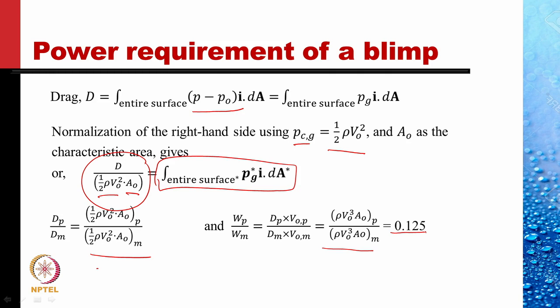So the prototype uses only one-eighth of the power used by the model. The model would use eight times the power of the prototype. Why is this so? It's largely because the model is moving in water, which is about a thousand times denser. Therefore, you need to do a lot of work and spend a lot of power in moving the blimp at a similar speed.